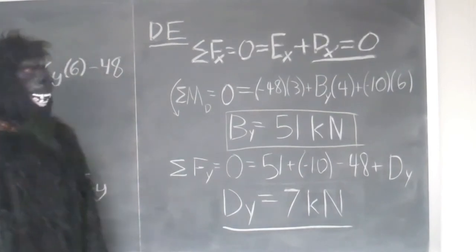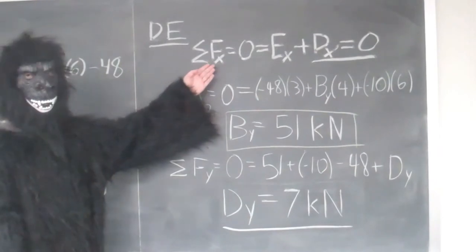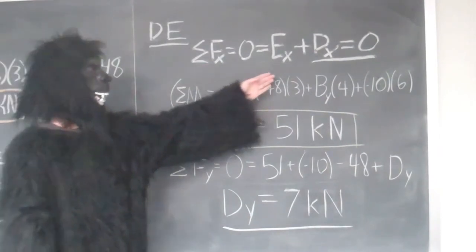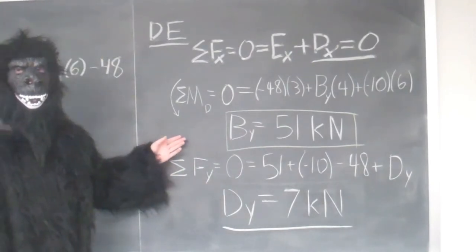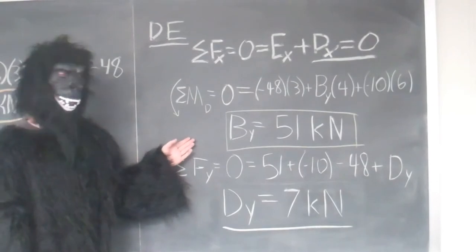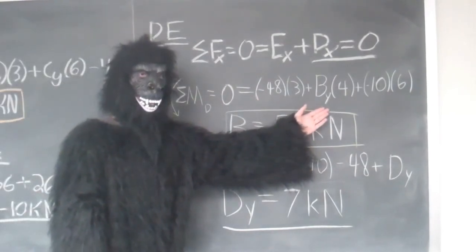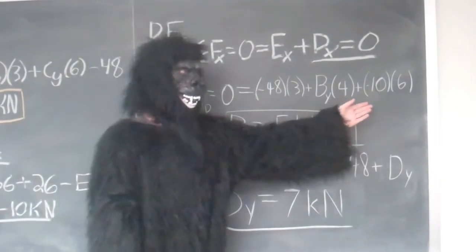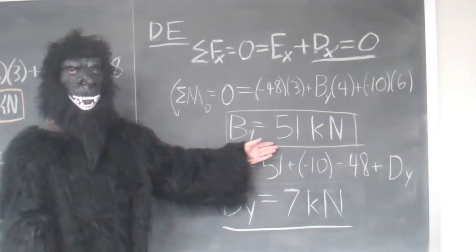In order to solve for all of the forces at our segment DE, we decided to start out with the sum of the forces in the X, which ended up giving that DX is equal to 0. To solve for BY, we took the moment at point D in order to cancel out DX and DY, which gave us the moment of our distributed load plus the moment of BY plus the moment of EY, which ended up giving that BY is equal to 51 kN.